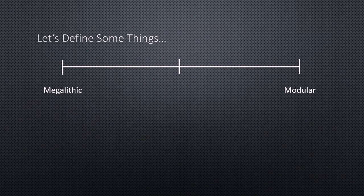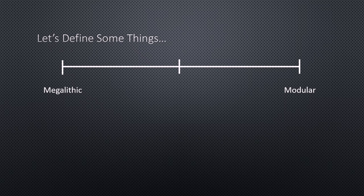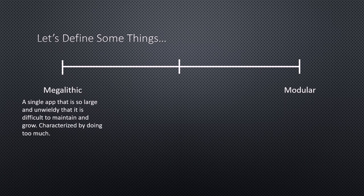To get started, I'd like to define some things as they relate to application architectures. I've drawn a spectrum showing how we could architect an application. There are two ends: one where we have megalithic applications, and on the other end, modular applications. A megalithic application is a single app that is so large and unwieldy, with so much going on, that it becomes difficult to maintain and really hard to grow.